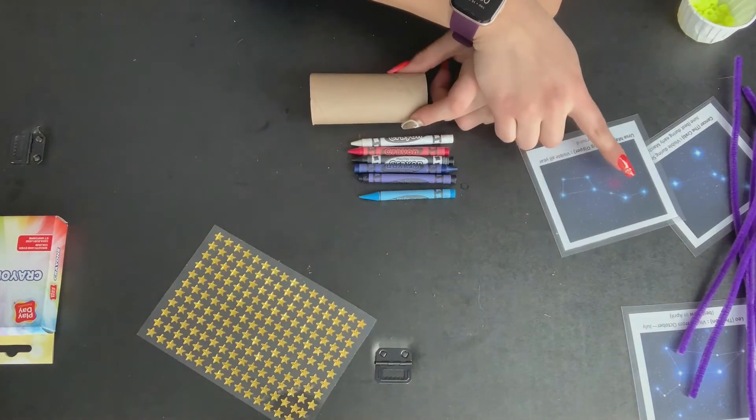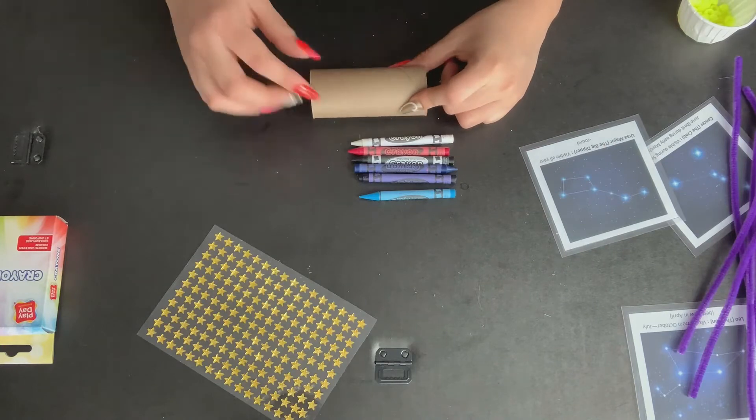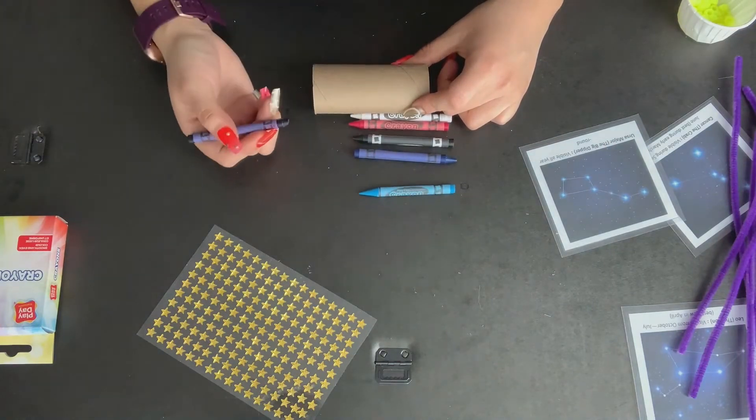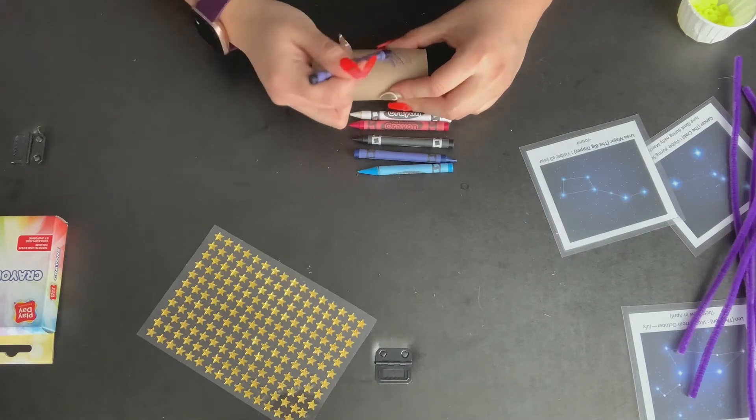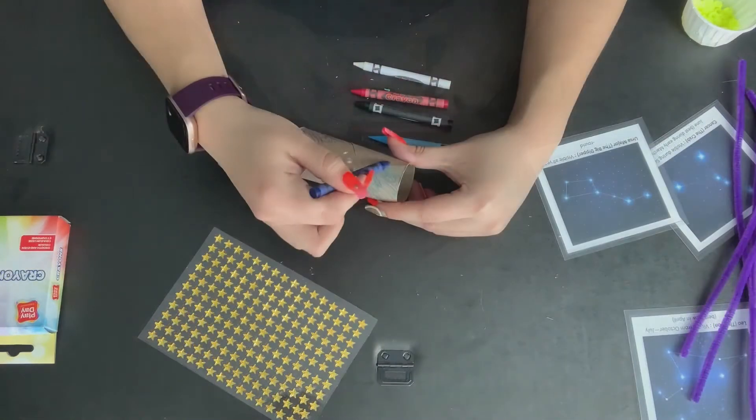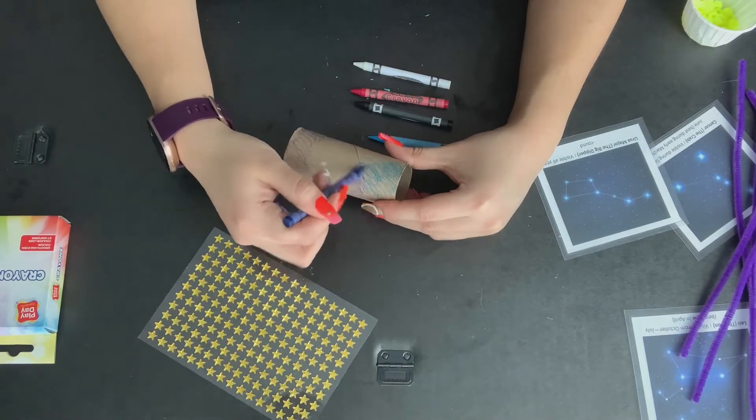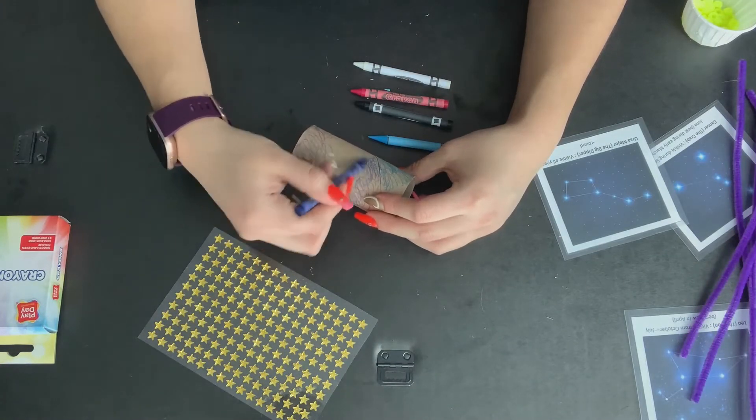So I wanted my tube to kind of look like the night sky, so I'm going to use my constellation card as a reference. But I also picked out some other different colors that don't show up on the constellation card. So I begin coloring and coloring until I am satisfied and happy with how my stargazer looks.